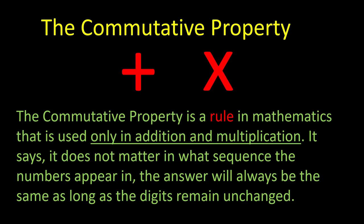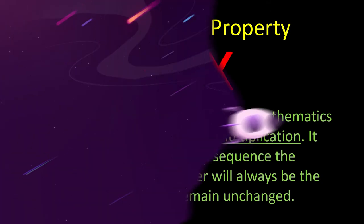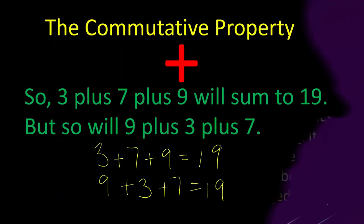The commutative property is a rule in mathematics that is used only in addition and multiplication. It says it does not matter in what sequence the numbers appear — the answer will always be the same, as long as the digits remain unchanged.